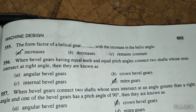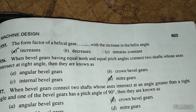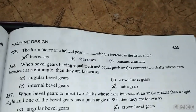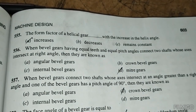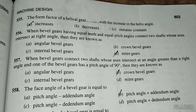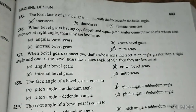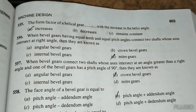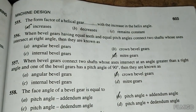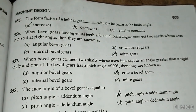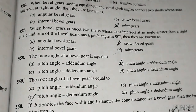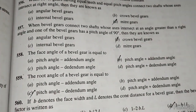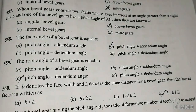Bevel gears having equal teeth and equal pitch connecting two shafts whose axes intersect at right angles are known as miter gears. When bevel gears connect two shafts whose axes intersect at an angle greater than 90 degrees and one bevel gear has a pitch angle of 90 degrees, they are known as crown bevel gears. The face angle of a bevel gear is equal to the pitch angle plus the addendum angle.